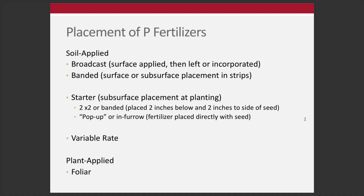For field crops, a very common starter placement is the 2x2 band — placed two inches below and two inches to the side of the seed. That has been a standard for how we apply starter fertilizer. There's also pop-up fertilizer, sometimes called in-furrow, when fertilizer is placed directly with the seed. Anytime we're putting fertilizer with the seed we have to be careful about salt burn or seed damage, either from the salt or from the ammonium in a nitrogen fertilizer source.